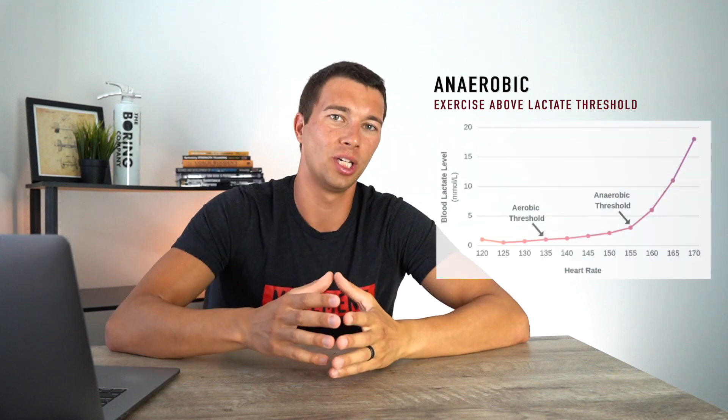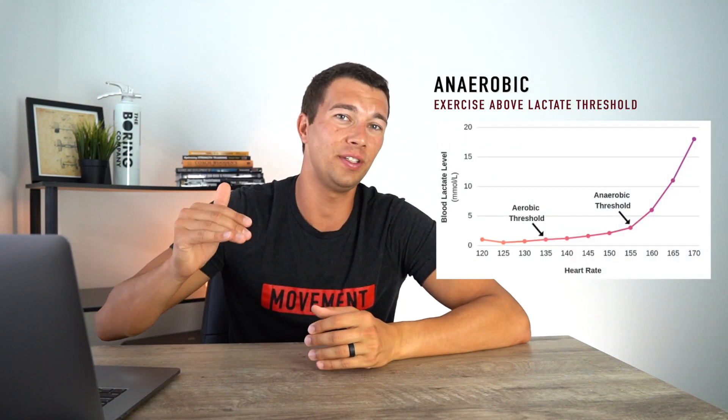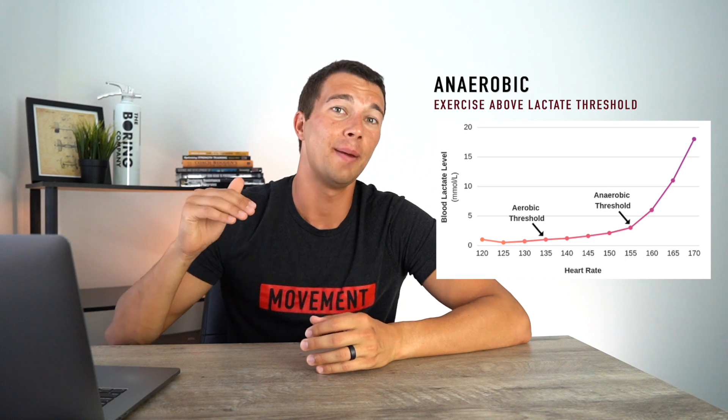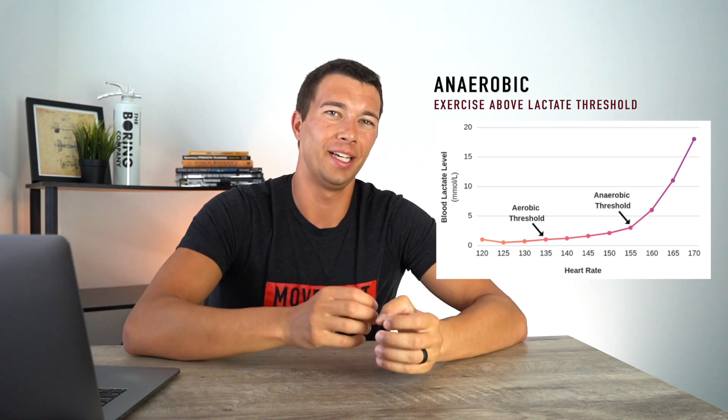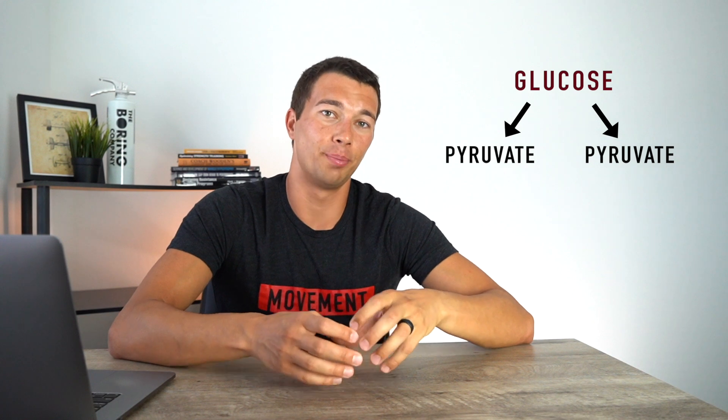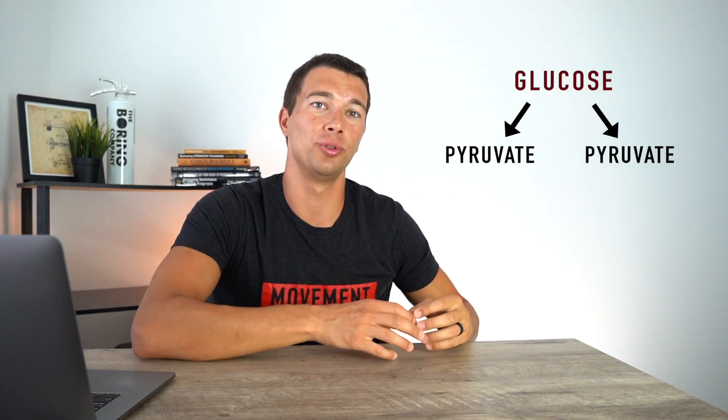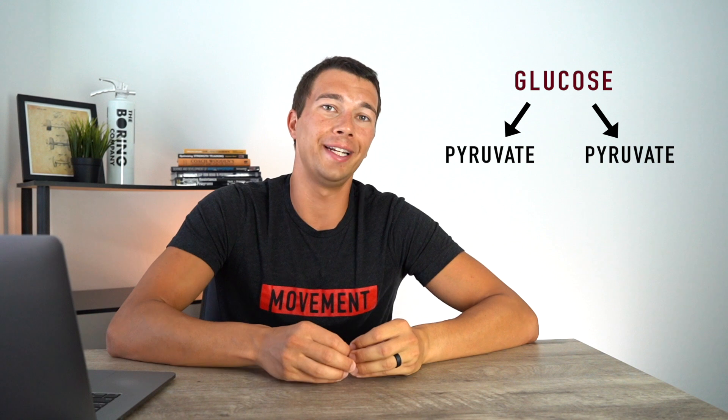Now let's move into condition number two: sprinting or conditioning work. This is exercise above the lactate threshold — for most people, above 155 to 160 beats per minute, maybe even into the 170s or 180s. Under these conditions, lactate is going to enter the scene. As we're breaking down glucose, our glucose molecule splits into pyruvate, but we no longer have enough oxygen to break down all those pyruvate molecules oxidatively. Some of that pyruvate can't be oxidized, and this is where we shift to relying on more anaerobic metabolism.